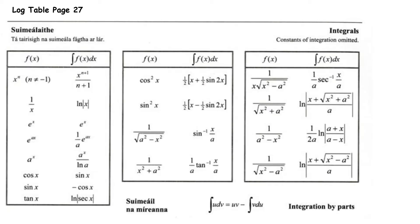On page 27 of your log tables, we're given rules of integrals. We'll focus on the first rule: x to the power of n integrates to x to the power of n plus 1 over n plus 1. It's important you can work quickly with any x to a power. Be aware this rule doesn't work when n equals negative 1, because adding 1 to the power gives 0, and dividing by 0 is not possible — that case is handled separately.